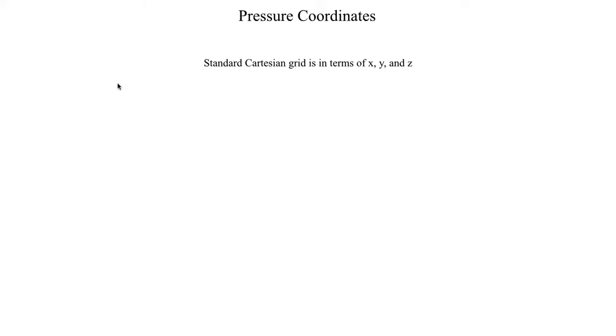First let's start by introducing what exactly we mean by a pressure coordinate system. Up until now we've been working with a standard Cartesian grid where each point in space is some value in the x direction, some value in the y direction, and some value in the z direction. So we represent every point or every variable in terms of x, y, and z coordinates.